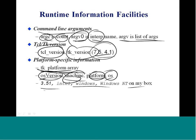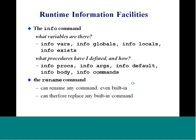There is also platform-specific information you can query. The tcl_platform array prints out a whole bunch of information — you can query OS, machine, platform, and OS version in that order. There is also the info command, which has additional sub-commands: info vars, info globals, info locals, and info exists give you information about variables in your program. You can also get procedure details through info procs, info args, info default, and info body.